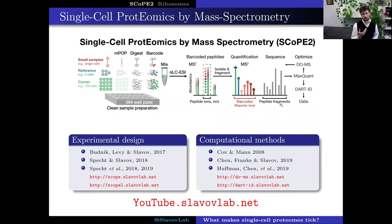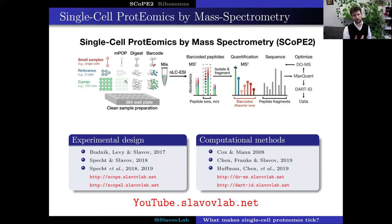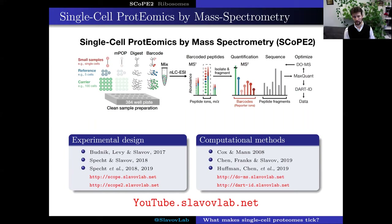To realize single-cell protein analysis by mass spectrometry, we have developed both experimental and computational approaches. Experimentally, we have developed new types of sample preparation that do not require detergents and that allow us to both miniaturize the sample preparation volume and fully automate it, so that we can process thousands of single cells with limited batch effects and limited effort. We have also developed the isobaric carrier concept, which allows us to more efficiently identify peptide sequences and reduce losses.